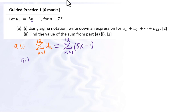Part A2: find the value of the sum from part A1. We can use sigma notation from the calculator to get the answer directly.